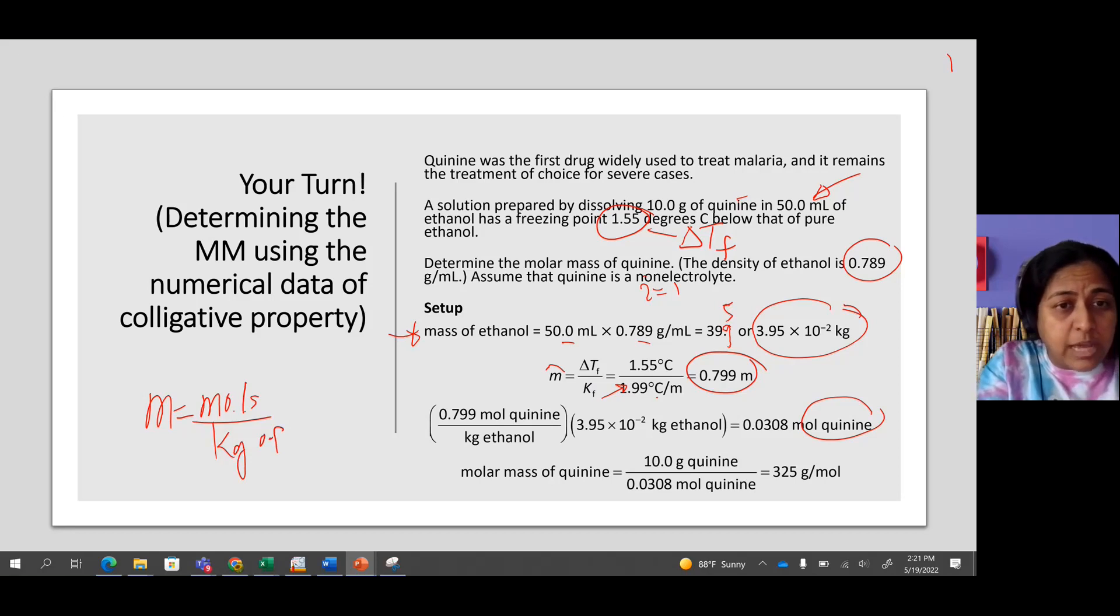So in order to calculate the moles, we need to multiply the molality by the kilograms of the solvent. This is the molality, and this is the kilograms of the solvent, and we get the moles of quinine.